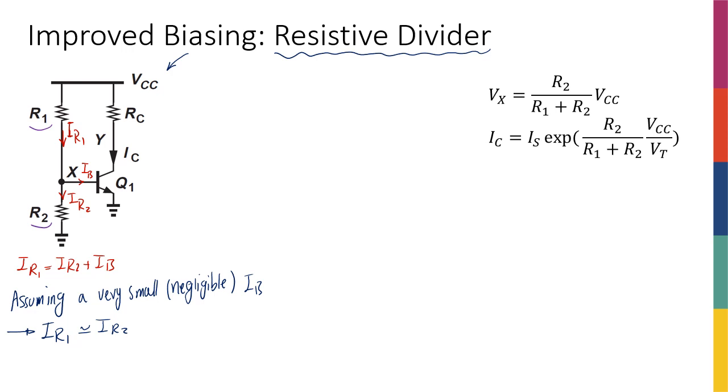And the reason that I'm saying that IB is negligible is that I know that for a decent transistor with a beta that is like 100, 200, or something like that, if IC is in the order of milliamps, IB is going to be in the order of tens of microamps.